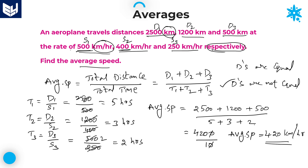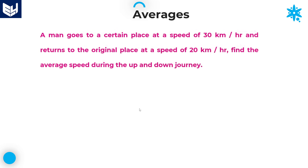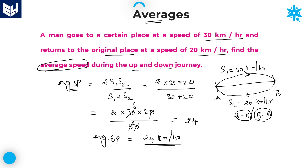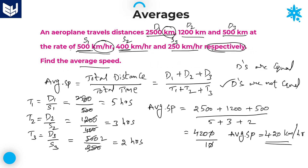In this way, we can solve problems related to average speed. If distances are equal, use the formula 2·S1·S2 / (S1 + S2). If distances are not equal, use average speed = total distance / total time. That's all about this session. I hope you enjoyed it — thank you very much for watching.